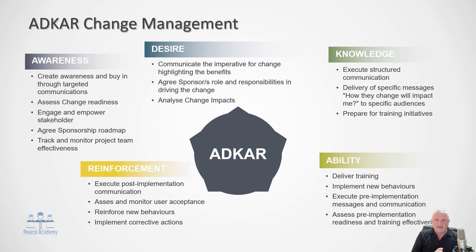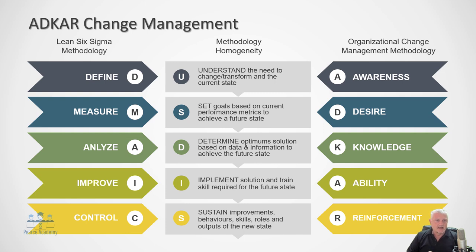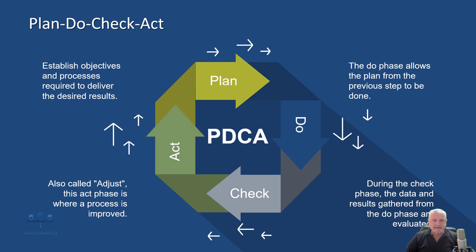Comparing ADKAR with Lean Six Sigma: Lean Six Sigma has Define, Measure, Analyze, Improve, and Control — basically a one-to-one relationship with the ADKAR process. Another framework is Plan-Do-Check-Act: Plan establishes objectives and processes to deliver the designed results; Do executes those processes; Check evaluates results from the Do phase to confirm success; Act (also known as Adjust) is the phase where the process is improved based on findings.